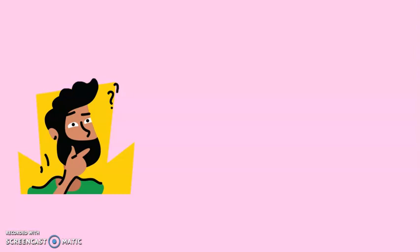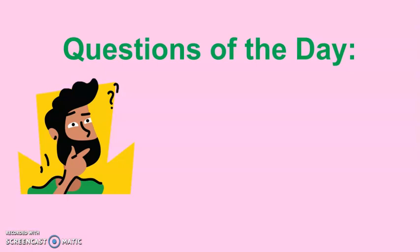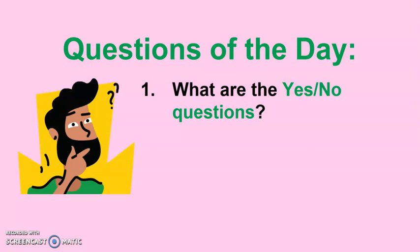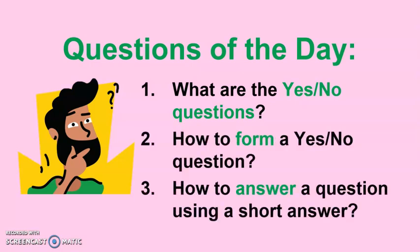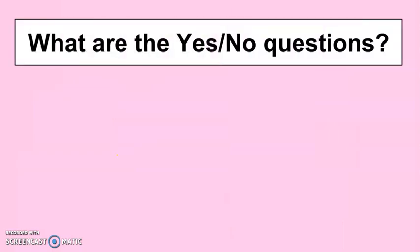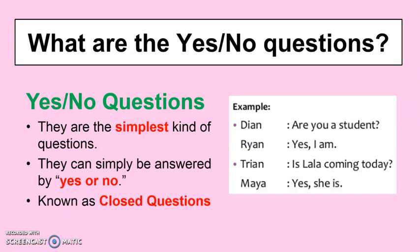Apart from WH questions, we also have yes/no questions. The main focus of today's lesson is: what are yes/no questions, how to form them, and how to answer them using a short answer. Yes/no questions are the simplest kind of questions — they can simply be answered by yes or no, so there are only two possible responses. They are also known as closed questions.